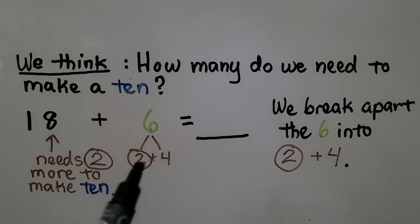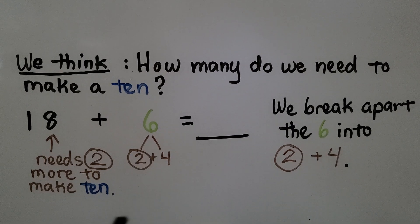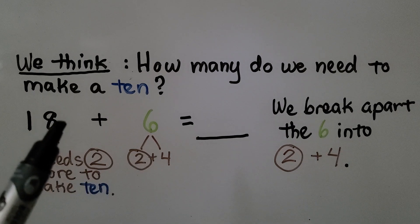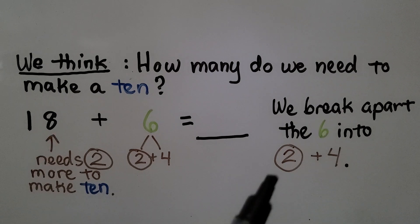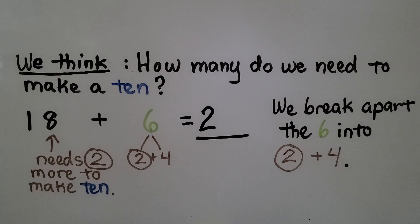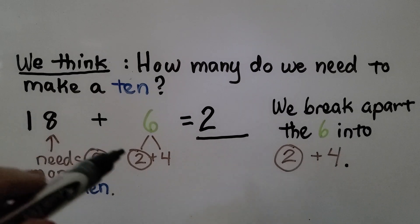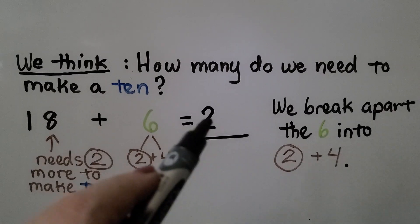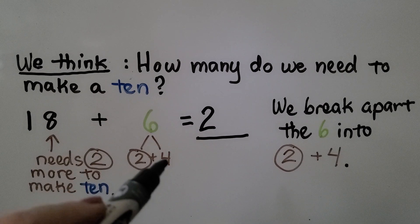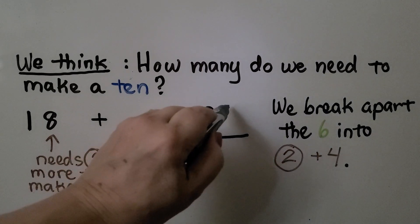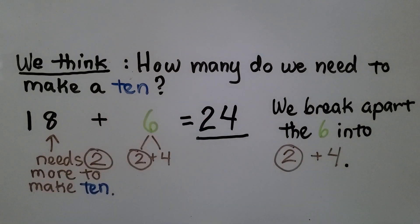That's going to leave a 4. So we're going to do 2 plus 4. We give the 2 to the 8 and make a ten. Which means now we have another ten. We have one ten and another ten that we made with the 8 and the 2. So that's 2 tens. And that's going to leave 4 ones left over.